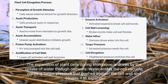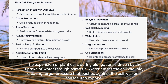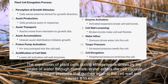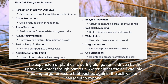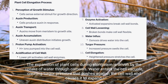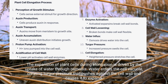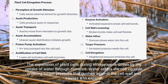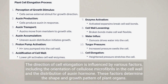The expansion of plant cells during elongation is driven by the uptake of water through osmosis. Water enters the cell vacuole, creating turgor pressure that pushes against the cell wall and causes it to expand.